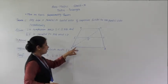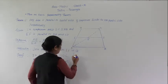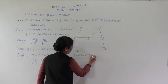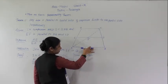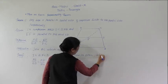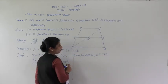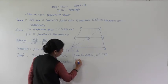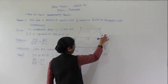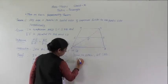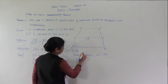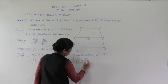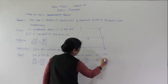Now in triangle ABC, GF is parallel to AB. By BPT: BF upon FC equals AG upon GC. This is the second statement by BPT.